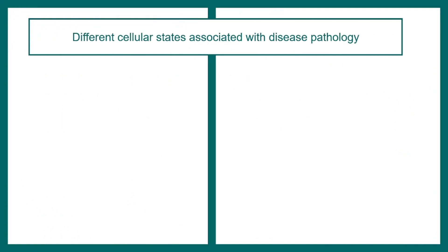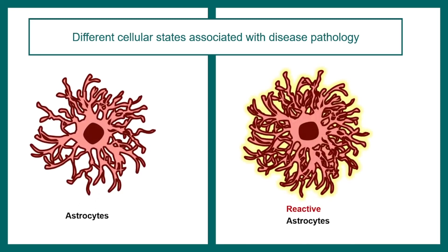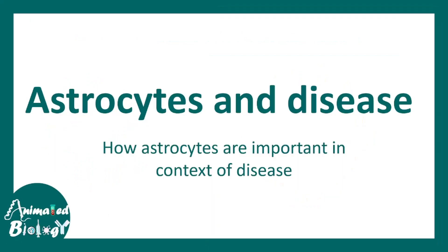Not only astrocyte diversity — when we think about a cell, we should also think about cellular states. Just like we are sometimes angry or happy, astrocytes can sometimes become reactive as well, meaning they become pathogenic. This reactive astrocyte concept is newly developed, and reactive astrocytes are heavily implicated in disease pathology.